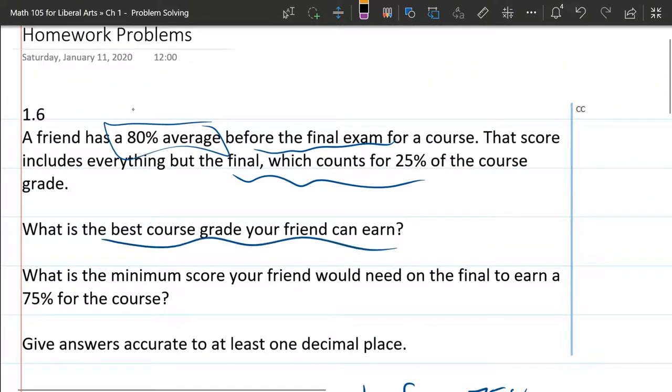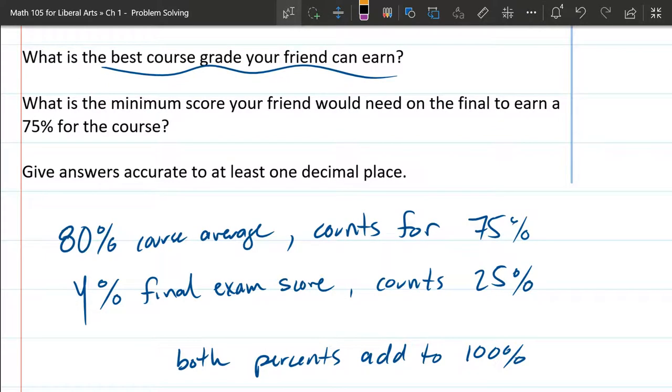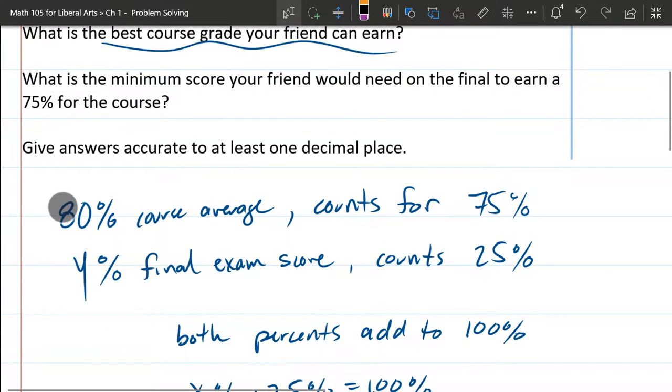Best grade your friend can earn in the class. Well, I think this should be pretty clear. The best grade you can earn is by getting 100% on your final, doing as best you can on the final, which would be 100%.